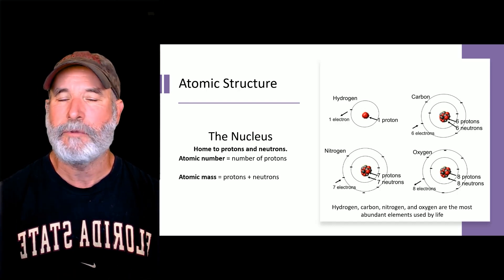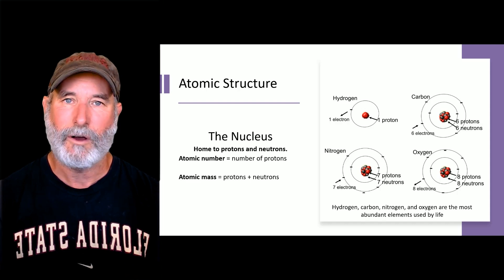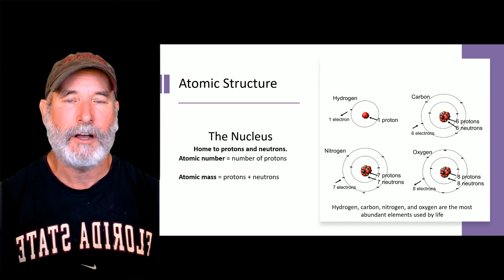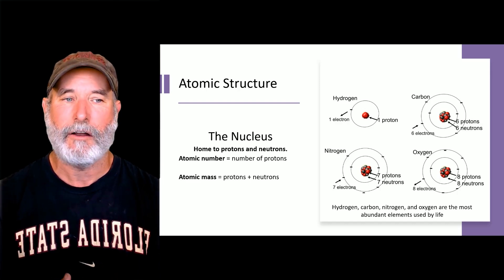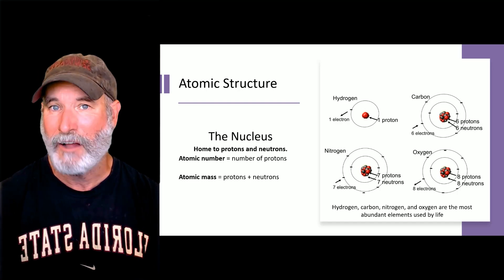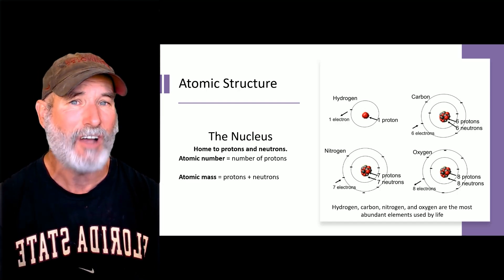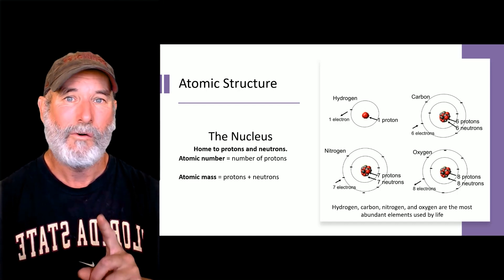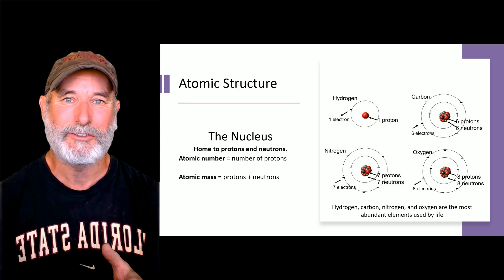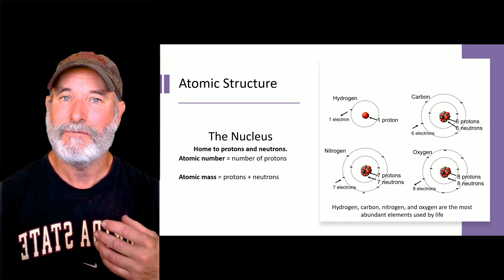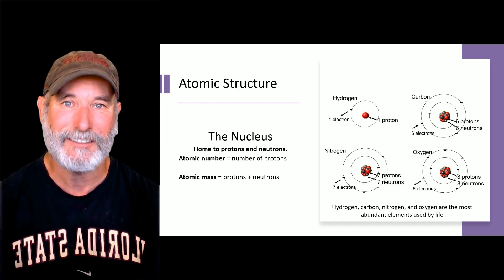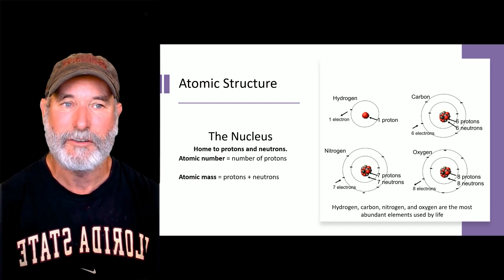So the atomic number is the number of protons, and protons are positively charged. Now, you'll also see something like carbon, and you'll see carbon-12. That's the atomic mass. So the mass is the number of protons plus the neutrons. So going to our examples here, hydrogen, carbon, nitrogen, and oxygen, those are four of the most abundant elements used by life. Hydrogen is atomic number one, one proton. It also has a mass of mostly one, so it's got no neutrons. However, there are variations of hydrogen that does have neutrons in it. Those are called isotopes, which I'll talk about in a few minutes.